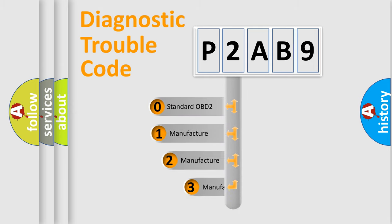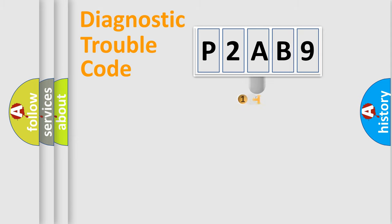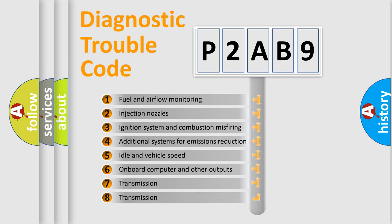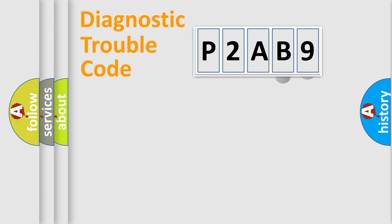If the second character is expressed as zero, it is a standardized error. In the case of numbers 1, 2, 3, it is a more prestigious expression of the car-specific error. The third character specifies a subset of errors. The distribution shown is valid only for the standardized DTC code.